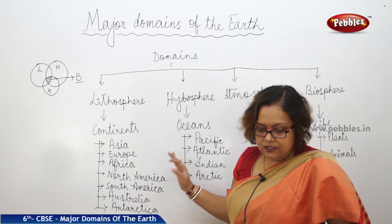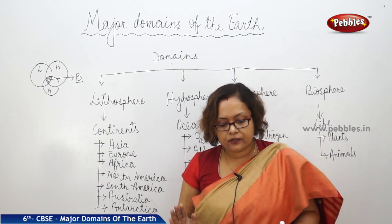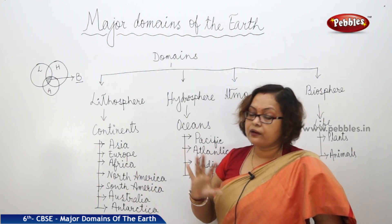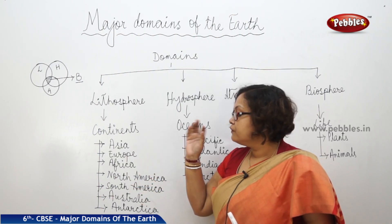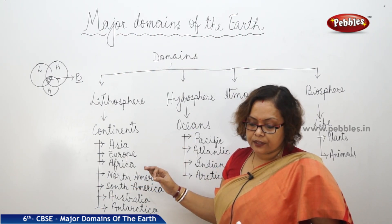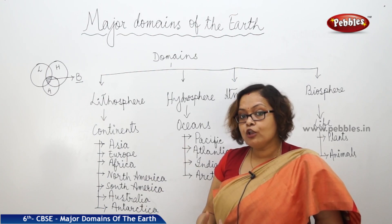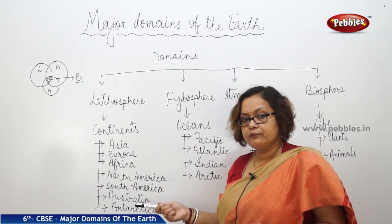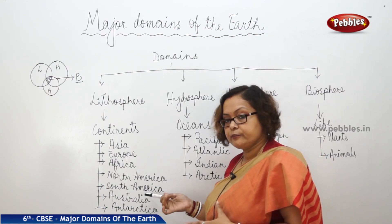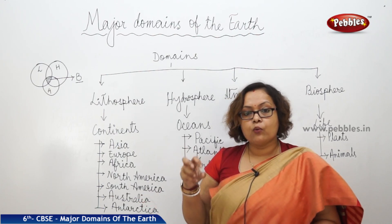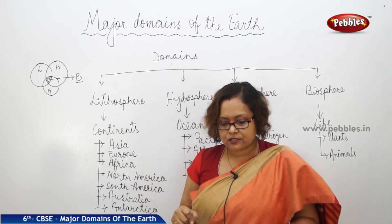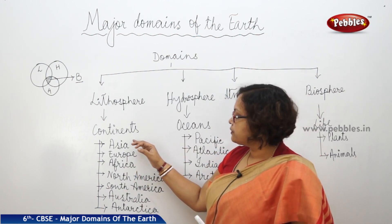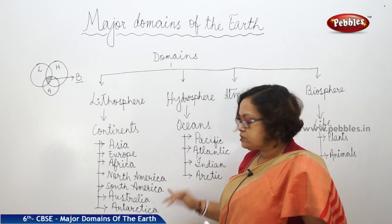Africa is also called the dark continent. The Sahara Desert and the Nile River are situated in Africa. North America is the third largest continent and is one of the ruling powers of the world, followed by South America as the fourth largest.